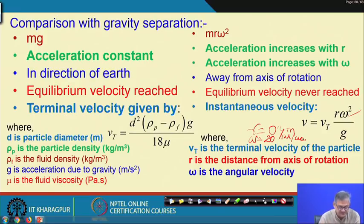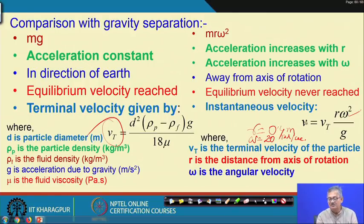With this data, find out V_T (terminal velocity) and V (instantaneous centrifugal velocity). Compare and you will find V is much much higher than V_T. Thank you.